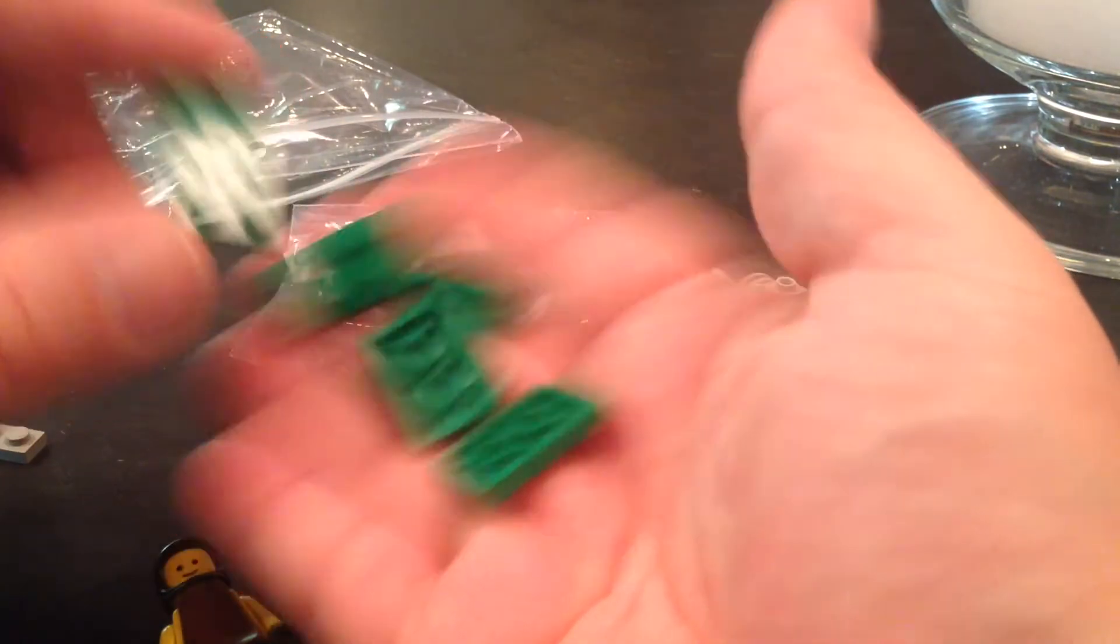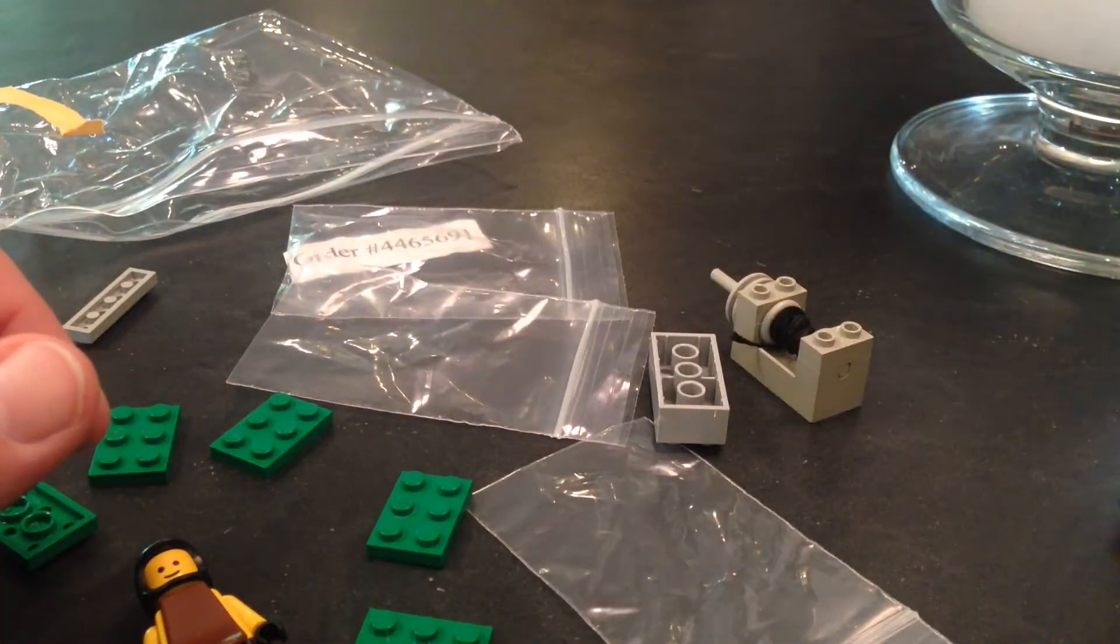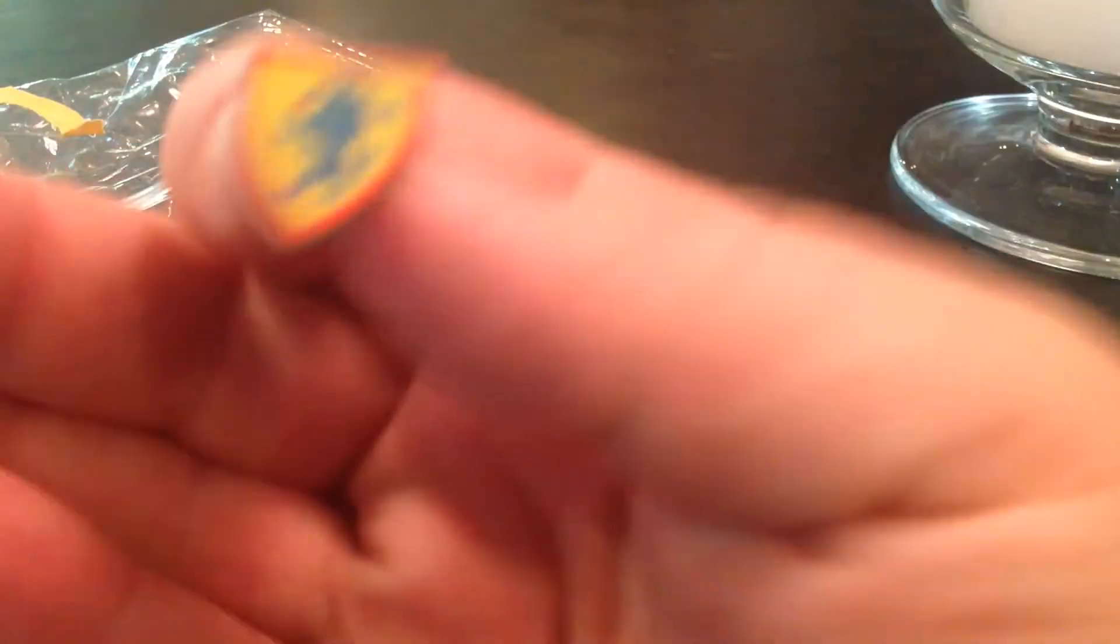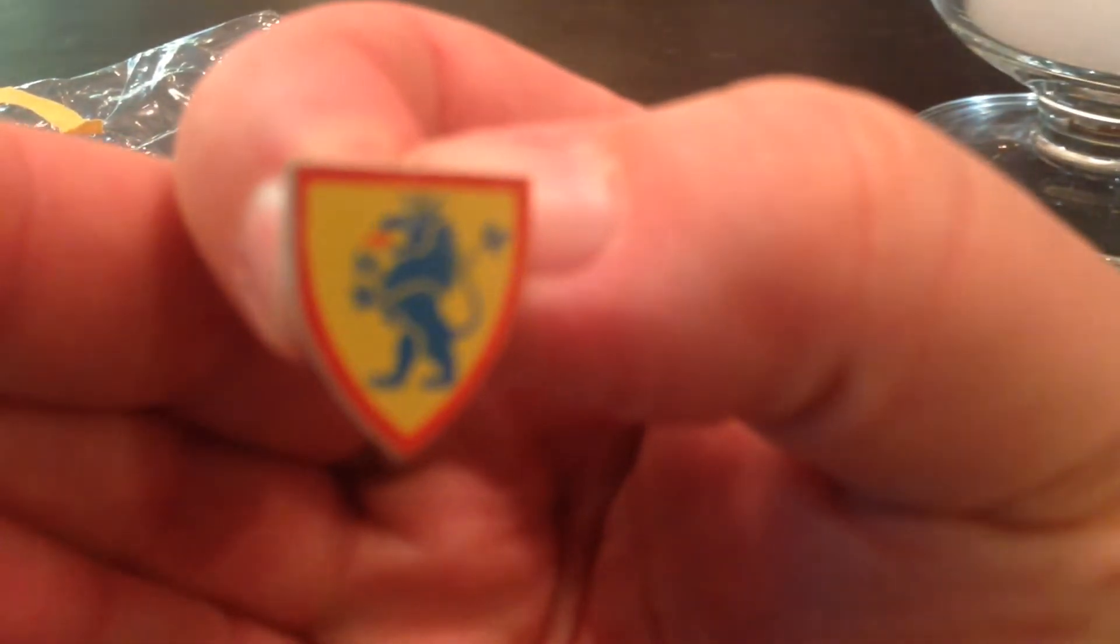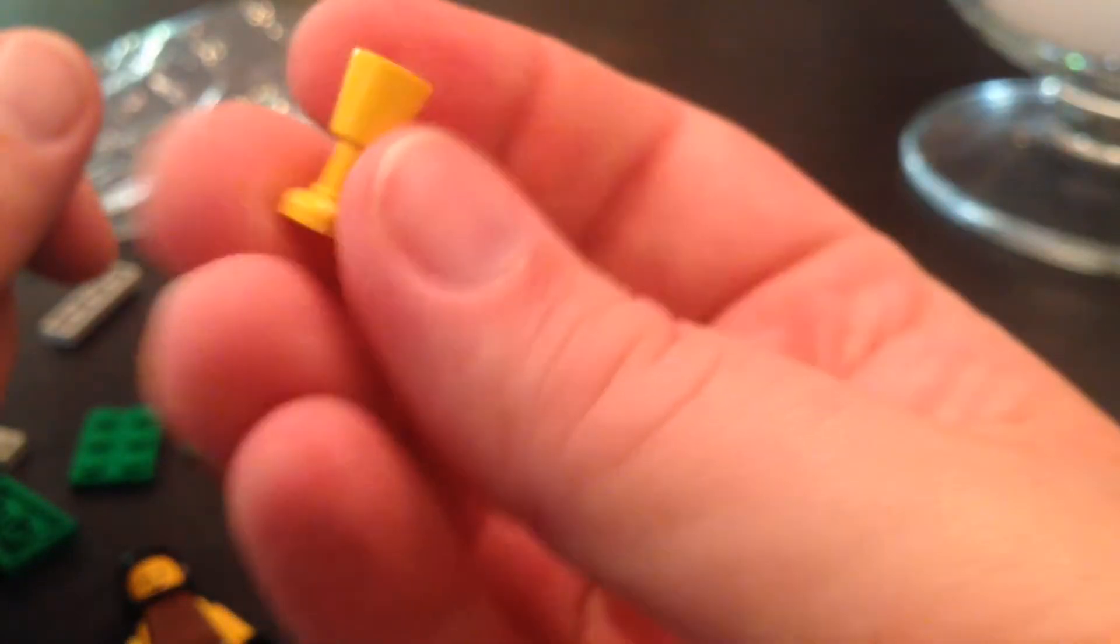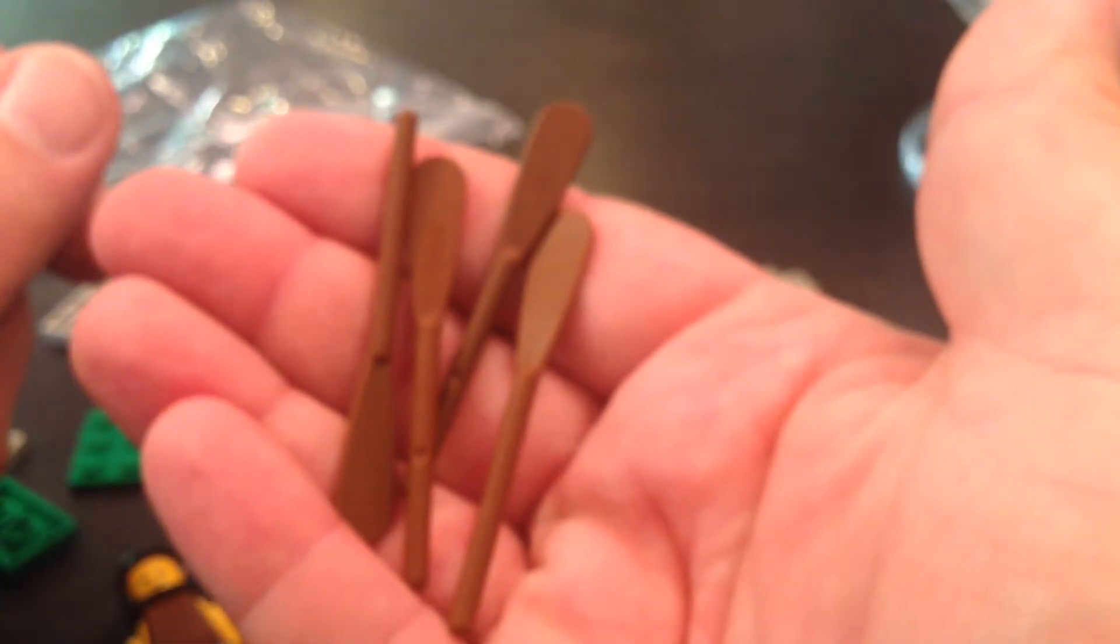Five 2x3 plates. One shield. One chalice thing. Four oars.